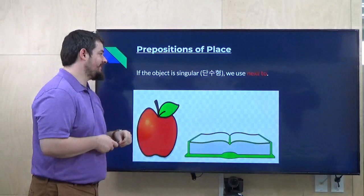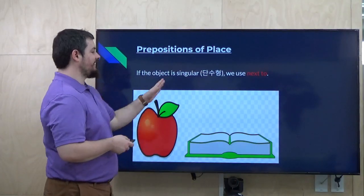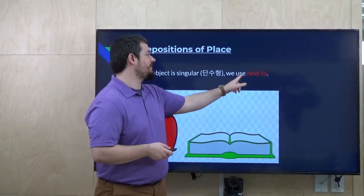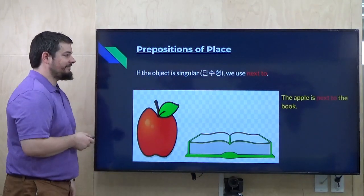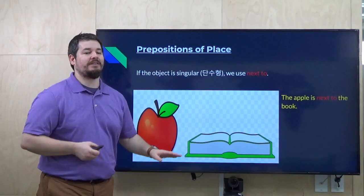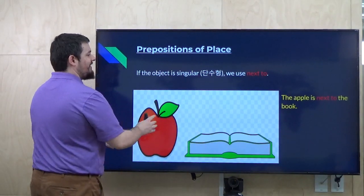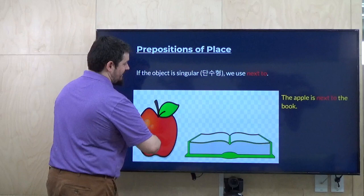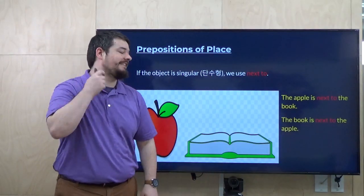If the object is singular, in that same case we would use 'next to.' The apple is next to the book. If you had two books, you could say 'in between.' But in this case, the apple is next to the book. The book is next to the apple.